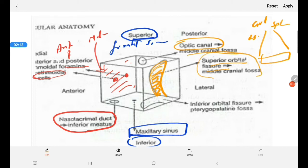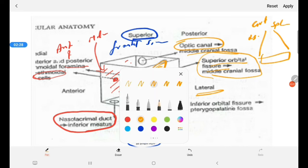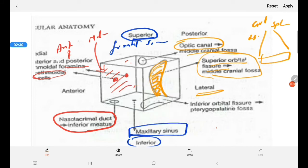We have superior orbital fissure at the posterior part. The lateral area is not having any significant relationship to any anatomical structure. Inferior, I forgot to mention the inferior orbital fissure and the pterygopalatine fossa. That is on the inferior part.